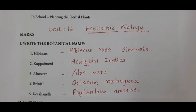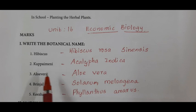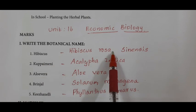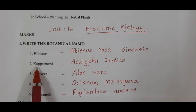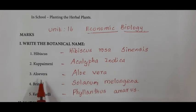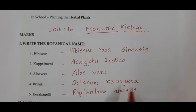10th standard science refresher course, unit 16: economic biology. Write the botanical name for the given plants. Hibiscus: Hibiscus rosa-sinensis. Kuppay meni: Akalifa indiga. Aloe vera: Aloe vera. Brinjal: Solanum melangina.